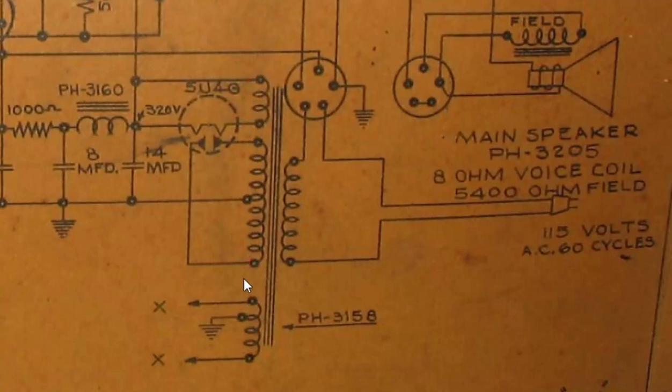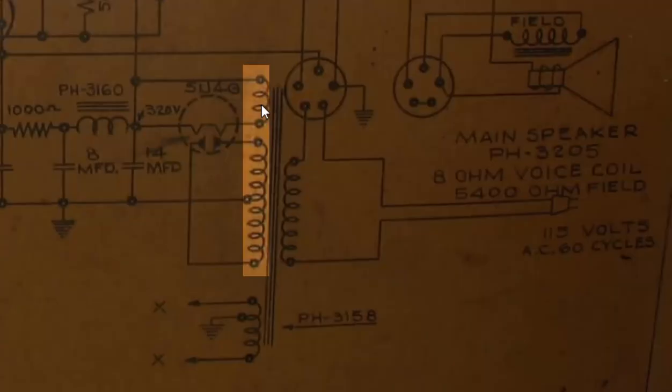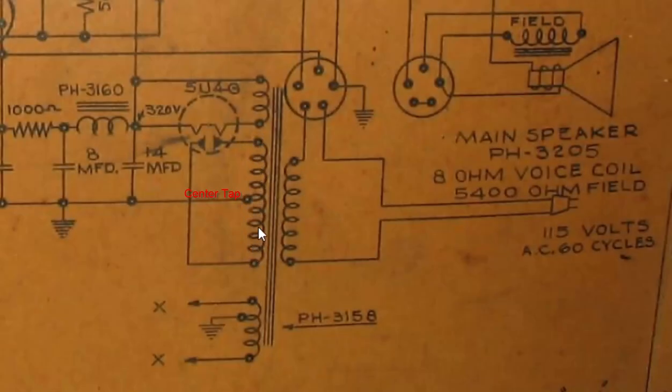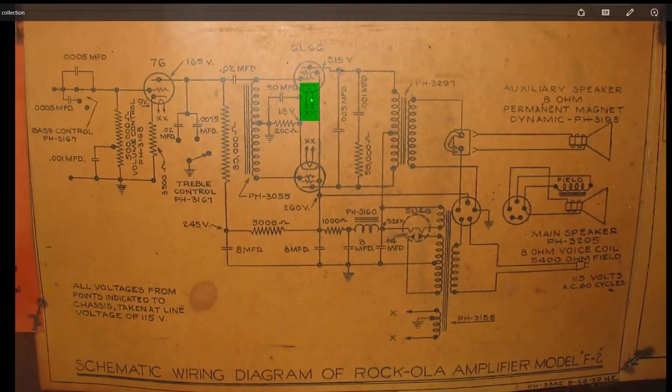So this has three secondaries. There's two associated with the power supply. This top one and the center one that has a center tap. And then there's the bottom one down here at the bottom that is providing power to the filaments. And so you can see that this is just a simple winding. It comes out here. It's noted as XX. That XX then connects to the filaments. So it connects to this one, this one, and this 76 over here.